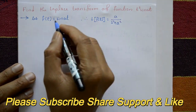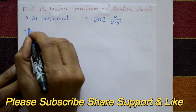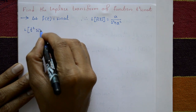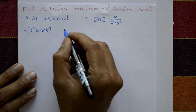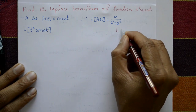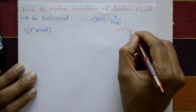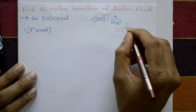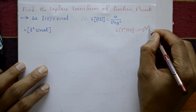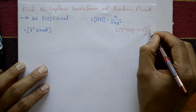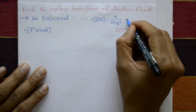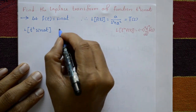Now including t², we need the Laplace of t² times sin(at). I know the property: Laplace of tⁿ f(t) equals minus one raised to n, times d raised to n over ds raised to n, of F̄(s), where F̄(s) is the Laplace of f(t), which is a over s² plus a².